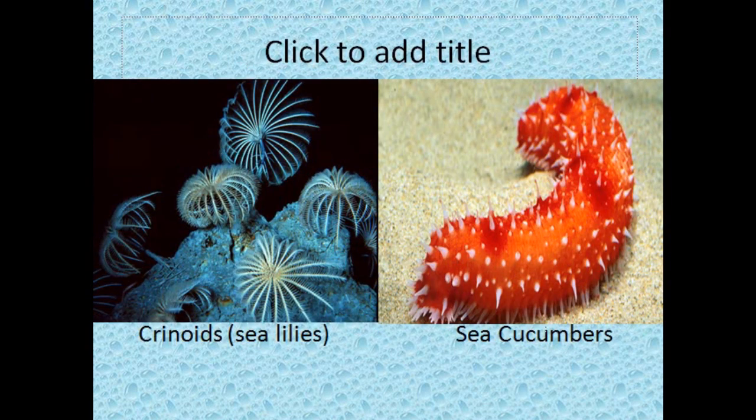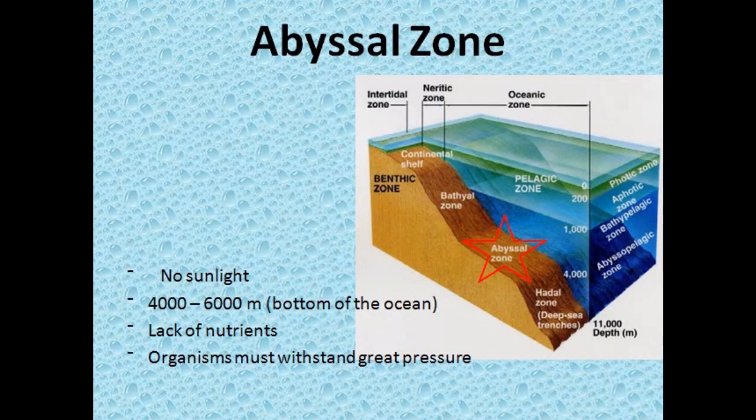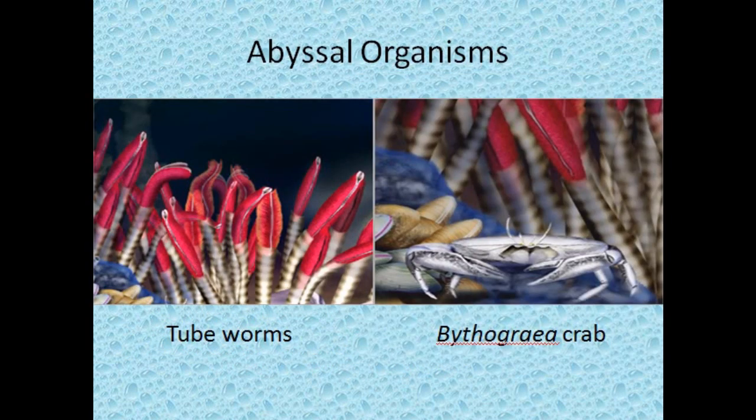Benthic organisms also include crinoids or sea lilies and sea cucumbers. Below the bathyo zone is the abyssal zone. No sunlight reaches the abyssal zone, as it's 4,000 to 6,000 meters deep. There's a lack of nutrients here, and organisms must withstand great pressures to survive. These organisms include tube worms and the bethel graea crab.